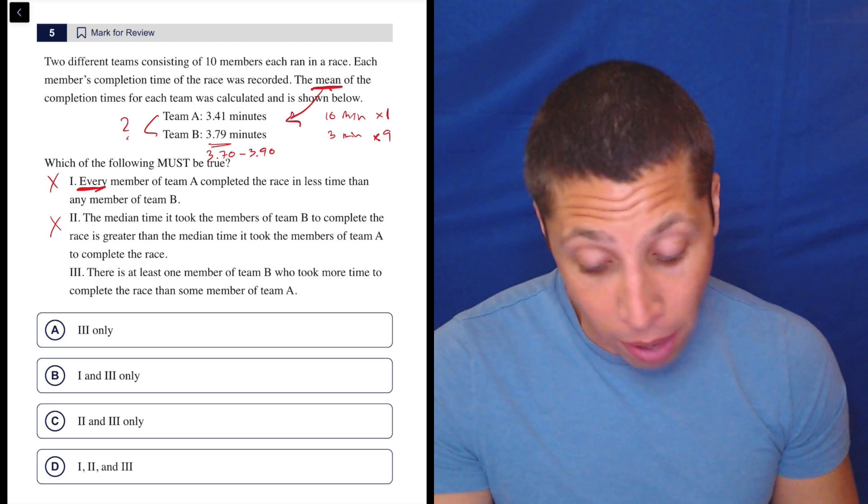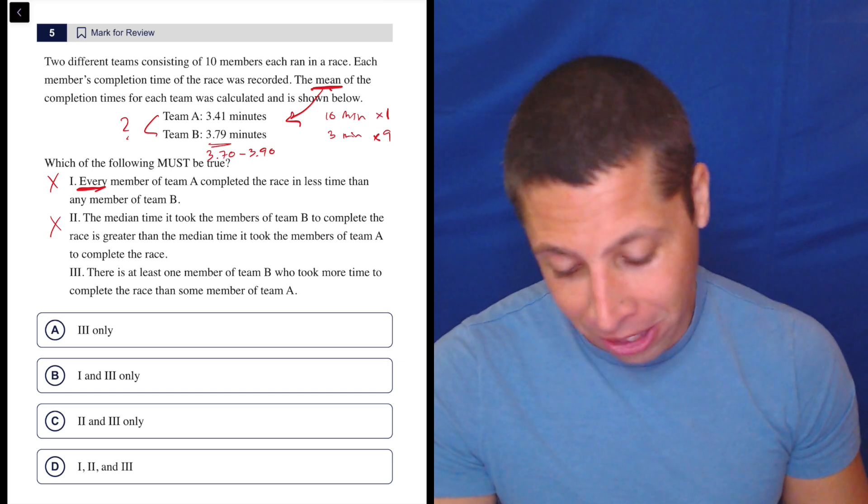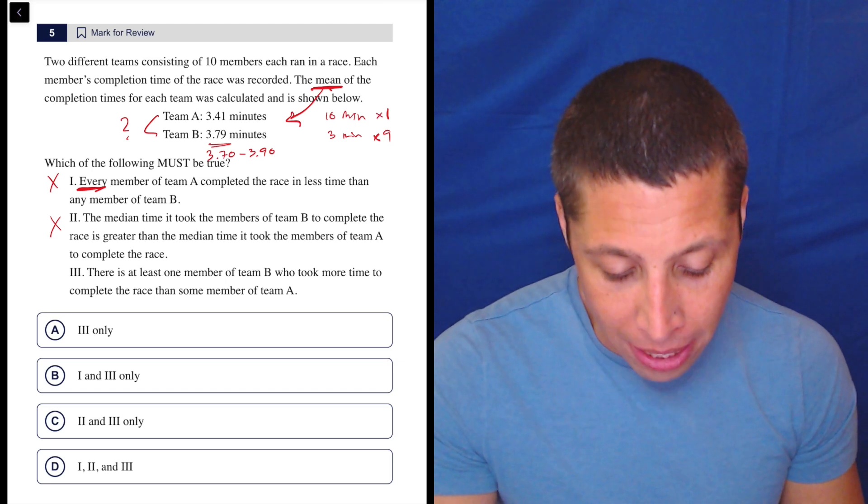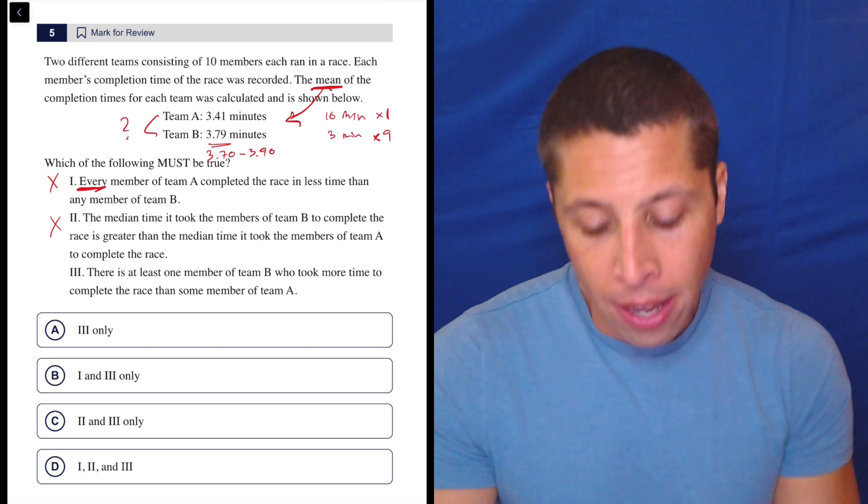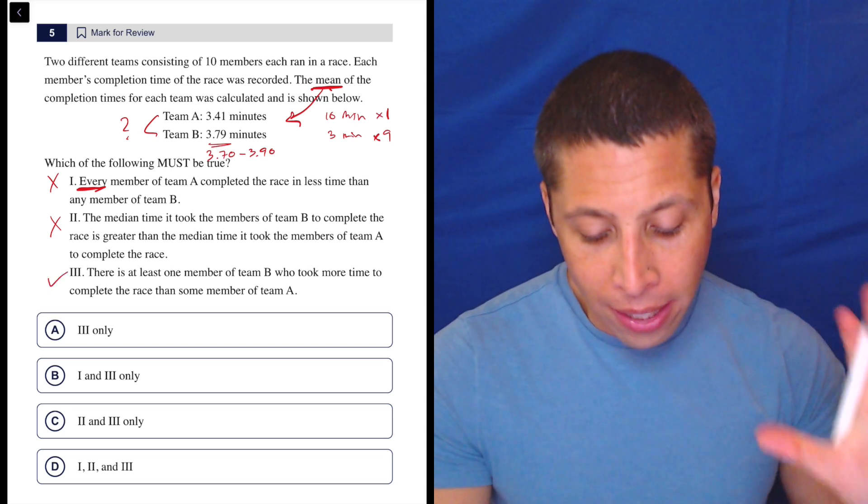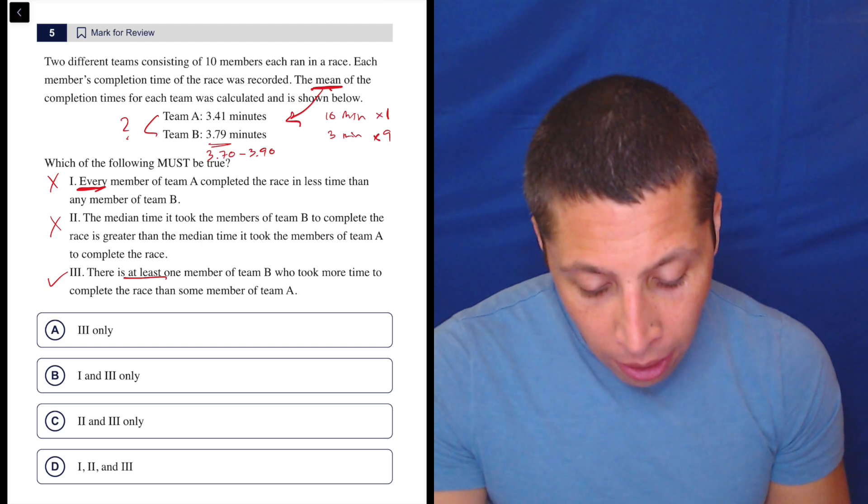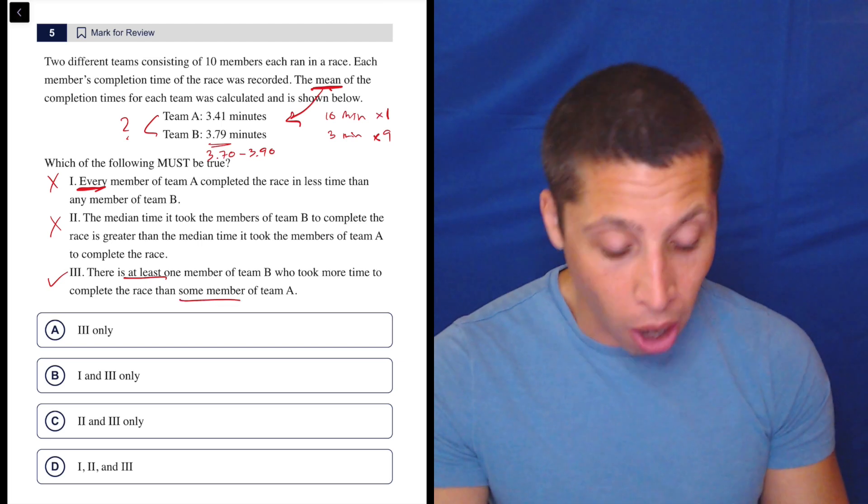Let's look at three. Hopefully it's right because otherwise we're out of answer choices. Three: There was at least one member of Team B who took more time to complete the race than some member of Team A. Yes. Now look at how nice that language is—at least one, some member. It's a lot softer.